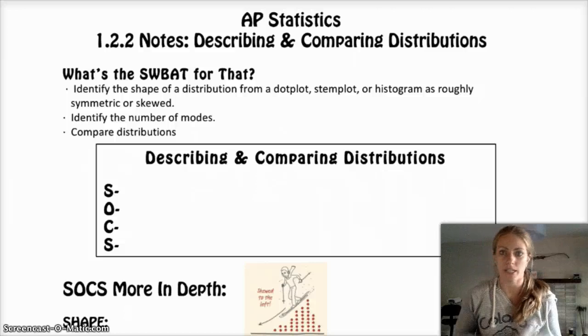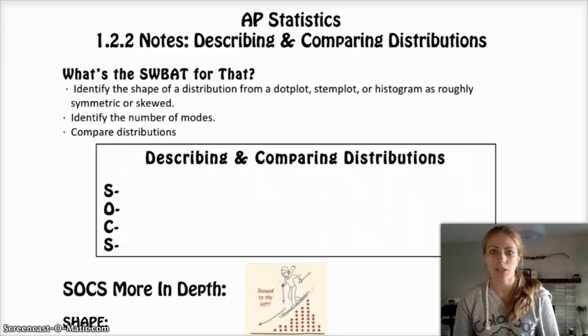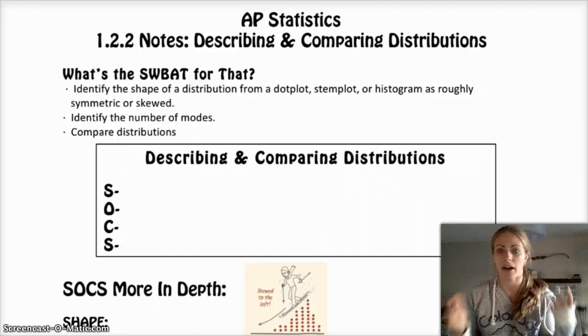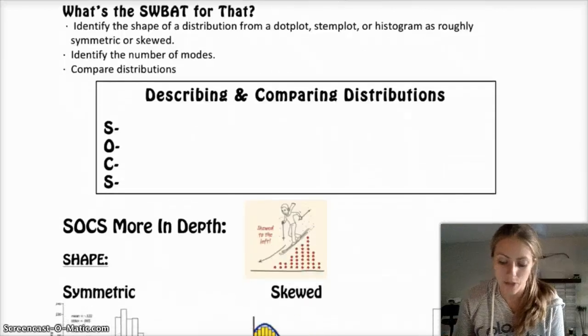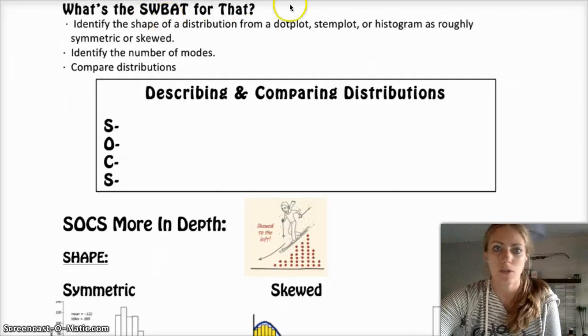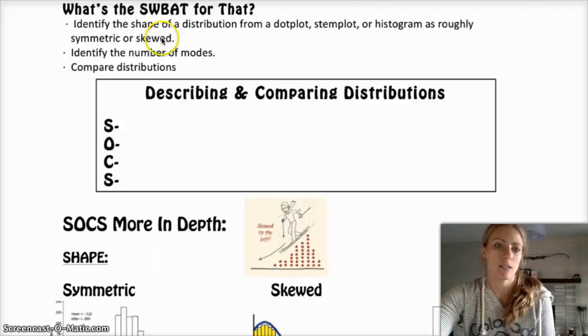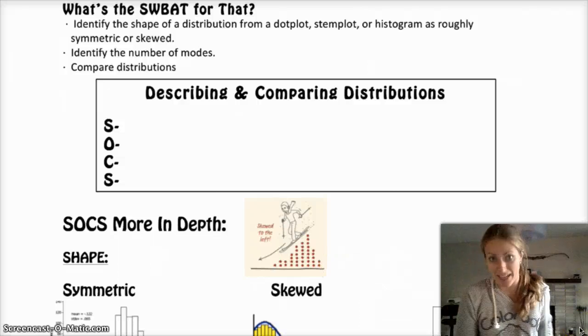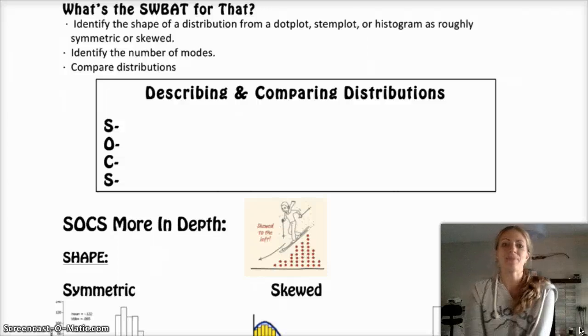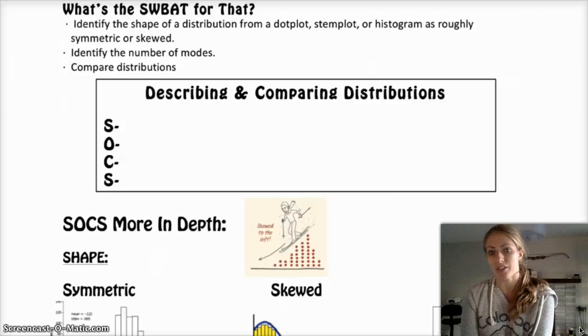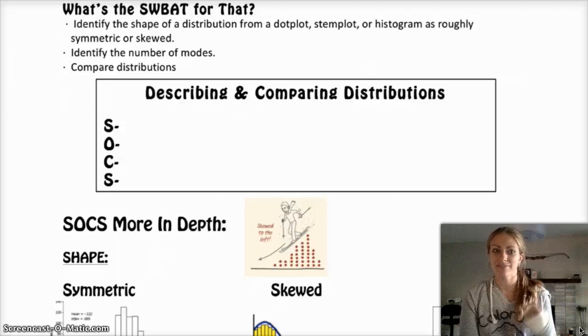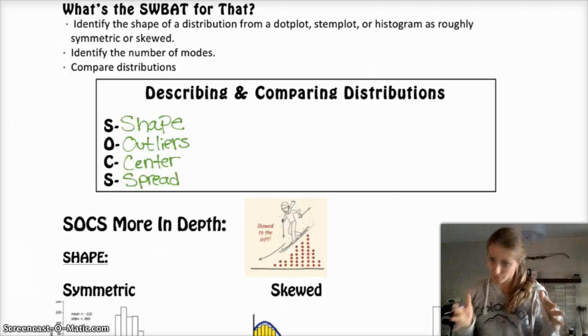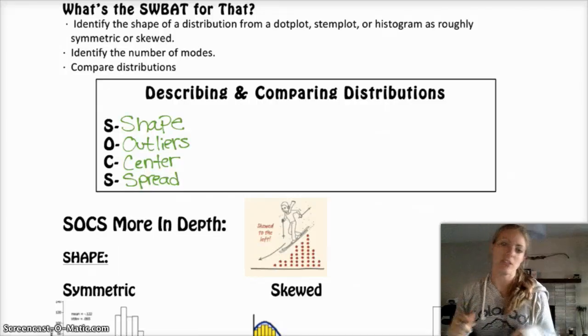It's important to be able to look at a set of data and make conclusions from it. Today we're going to talk about the shape of distributions from dot plots and histograms, what symmetry and skewedness means, modes, and comparing distributions. Anytime you get asked on a test to describe a distribution, you need to remember four things: Your SOCS - Shape, Outliers, Center, and Spread. Never forget your socks. We're going to go further in depth into what that actually means.